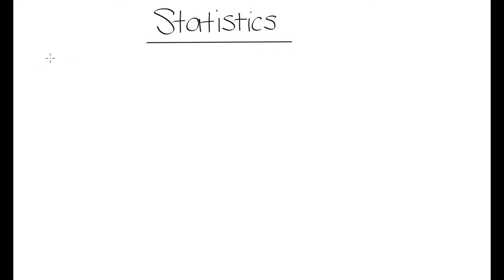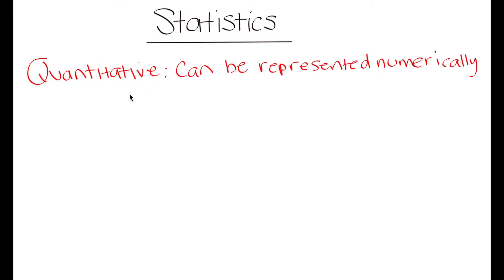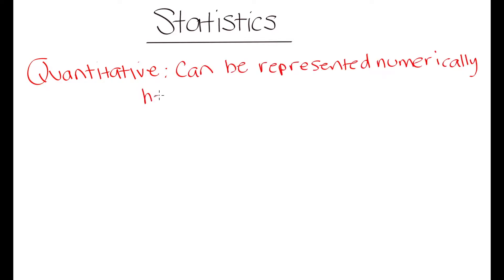When we are talking about data, I want to go over two main types of data that you will be dealing with in grade 10. The first is quantitative data. Quantitative data is data that can be represented numerically. This is going to be things like height, weight, or even the number of people in a certain classroom — all things we can represent using actual numbers.